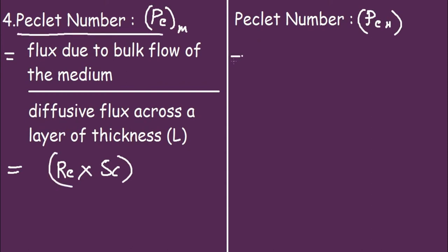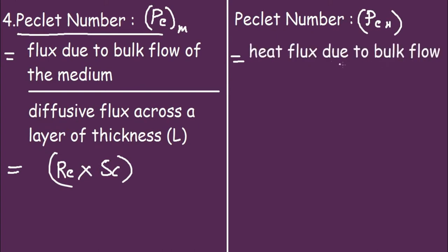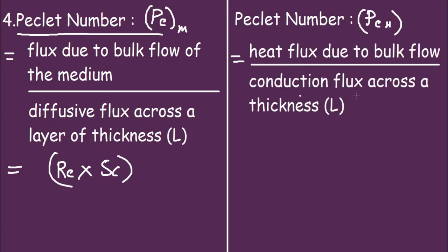The Peclet number for heat, Pe_h, equals heat flux due to bulk flow divided by conduction flux across thickness L. It is represented by Reynolds number times Prandtl number.